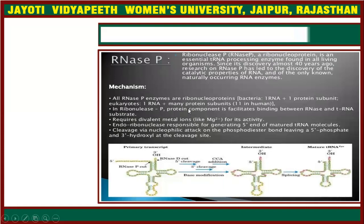RNase P is the third type of ribozyme. RNase P is a ribonucleoprotein — it is essentially an RNA processing enzyme found in all living organisms. In RNase P, the protein component facilitates binding between the RNase P RNA and tRNA substrates — binding between the RNase P and tRNAs.